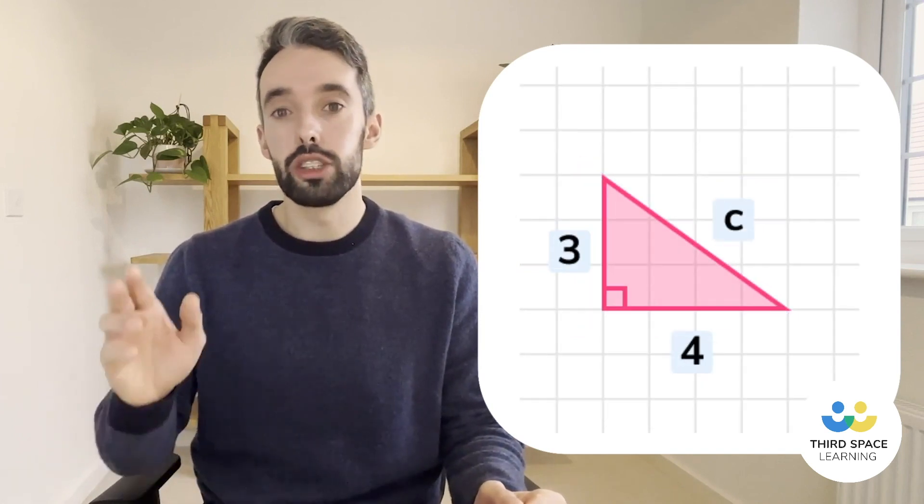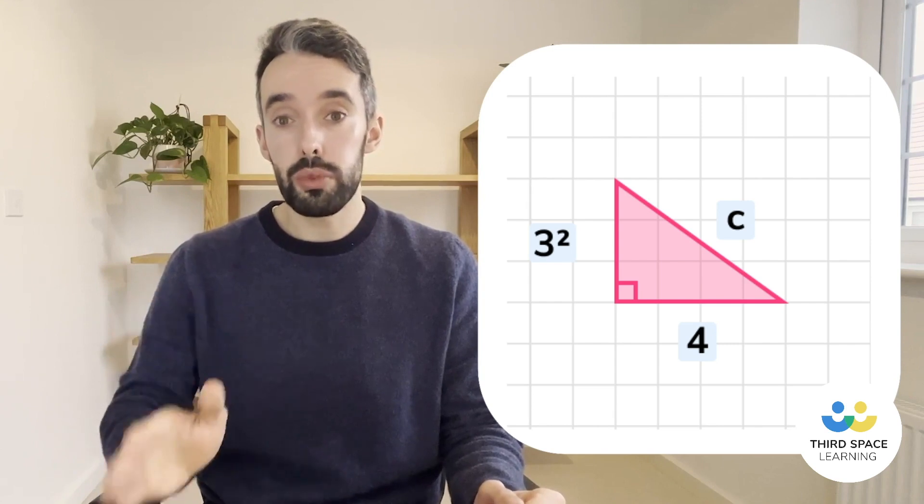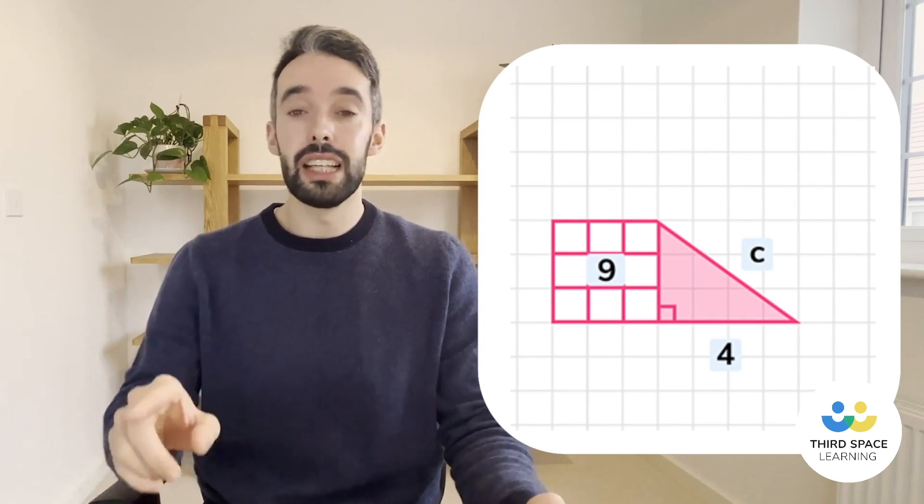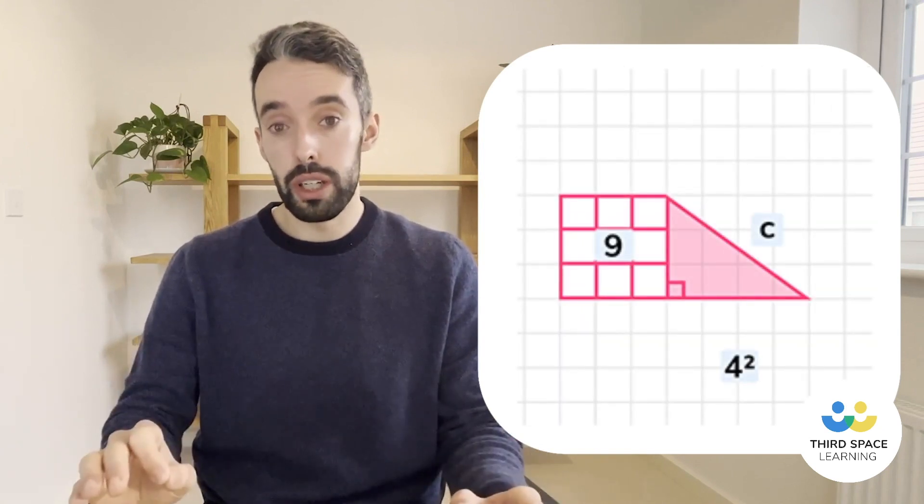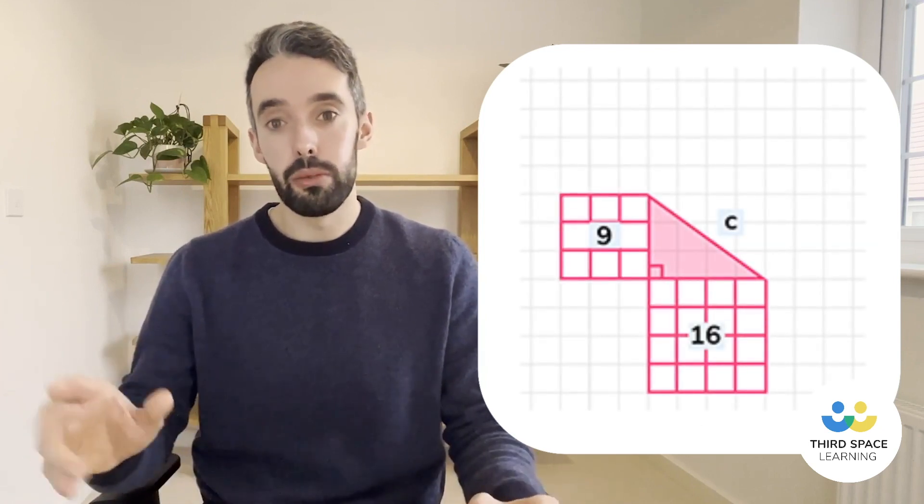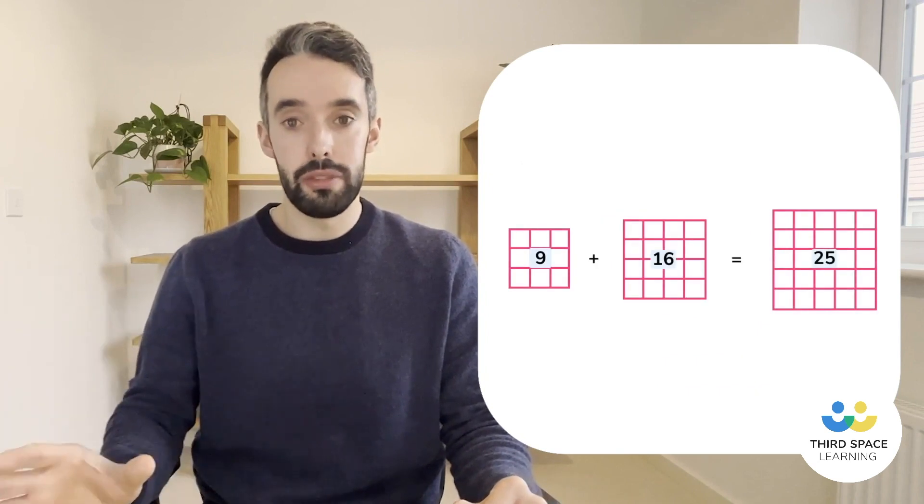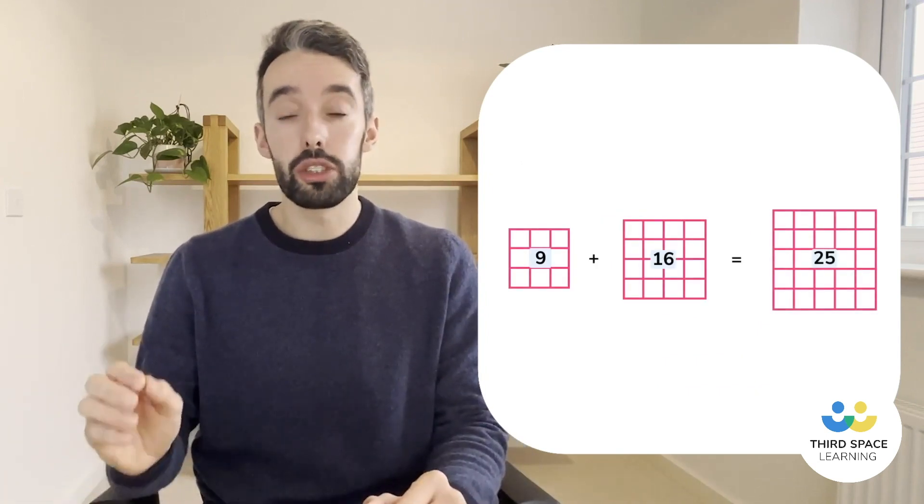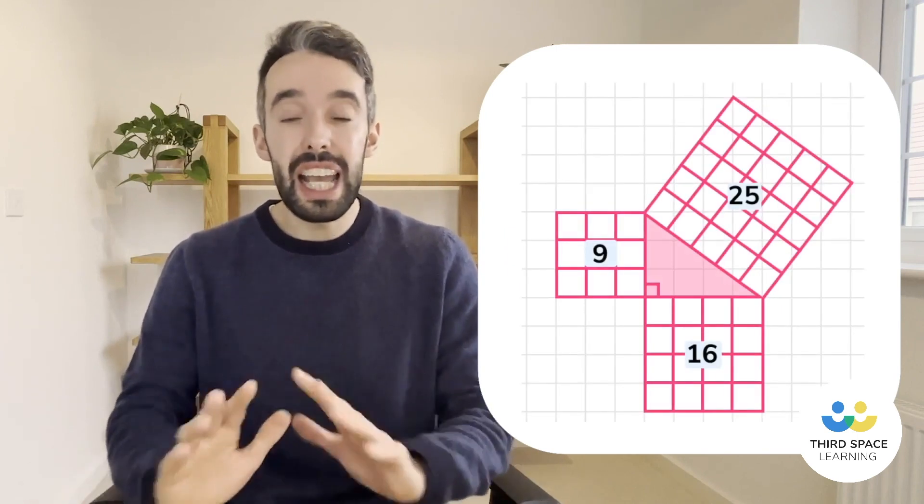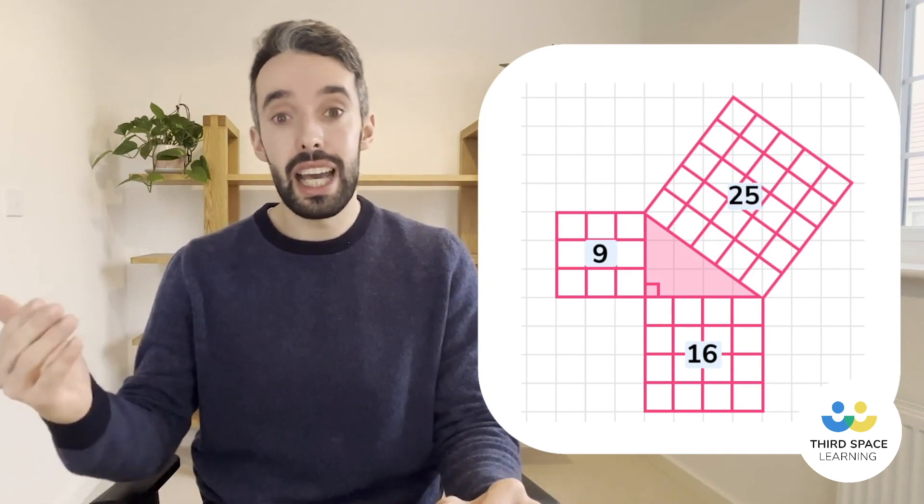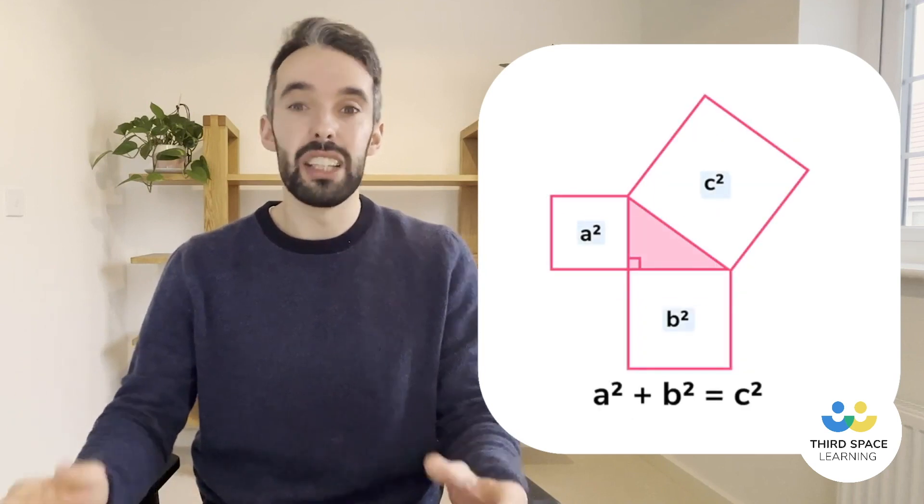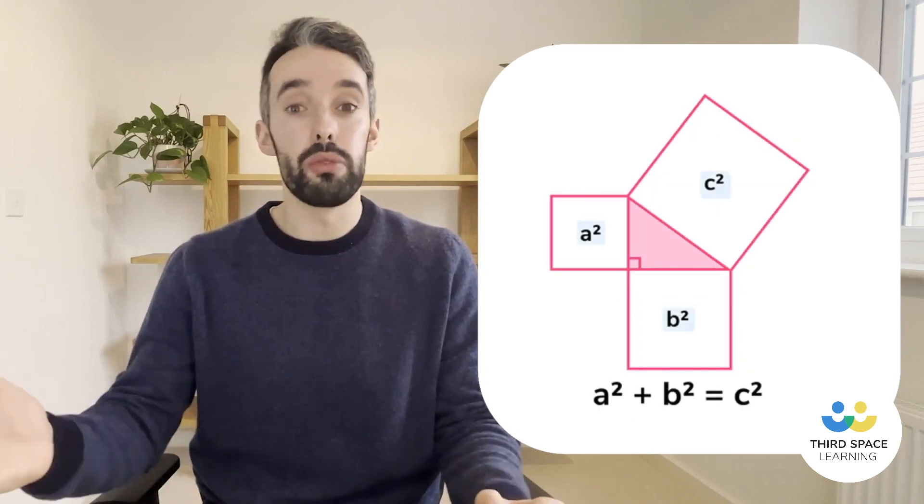Let's start then by squaring three. So three squared means three times three which is nine. Next, let's square the four. So four squared means four times four which is 16. Let's add those together. Well nine add 16 is 25. What we've worked out there is the square of the longest side of that triangle and this will work for any right-angled triangle. So we can say that a squared plus b squared is equal to c squared and then to work out c we just do the square root of c squared.